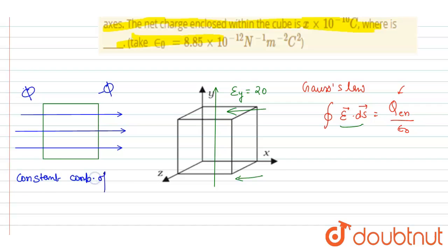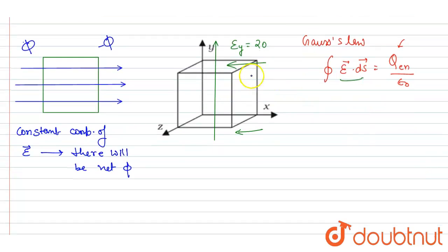Because of the variable component of electric field, there will be net flux. We are seeing here that the y component is 0 here, and here it is 20y^2 because here the y itself is 0 and here the y itself is 1.